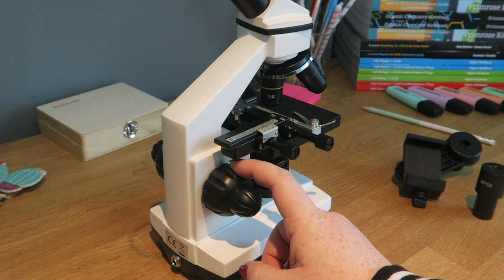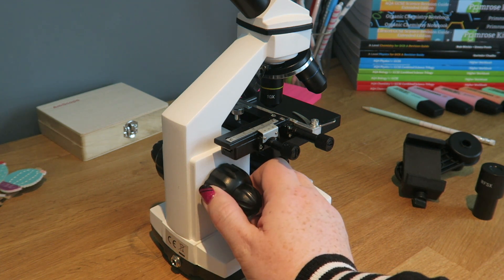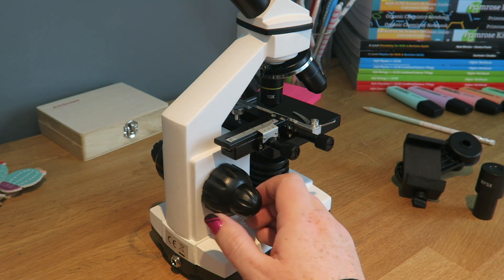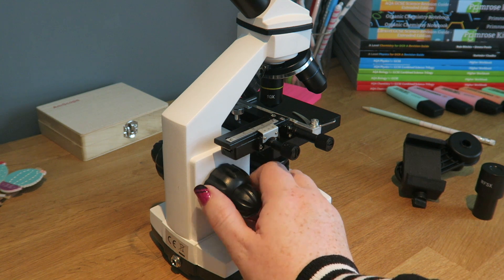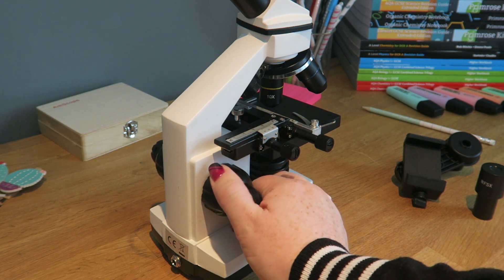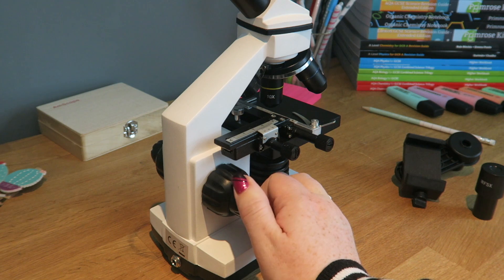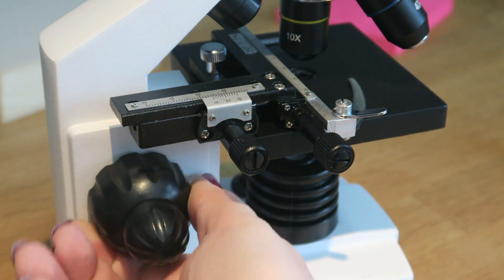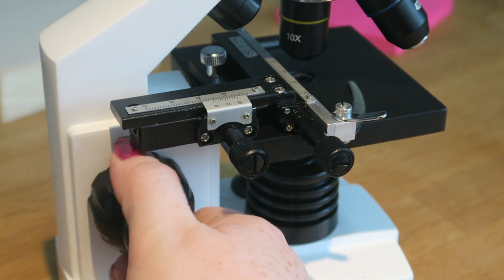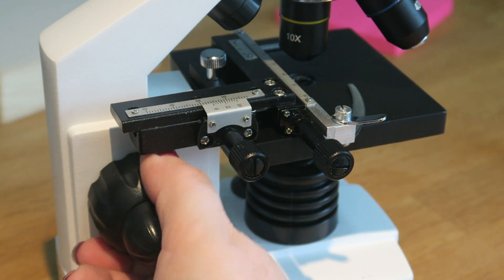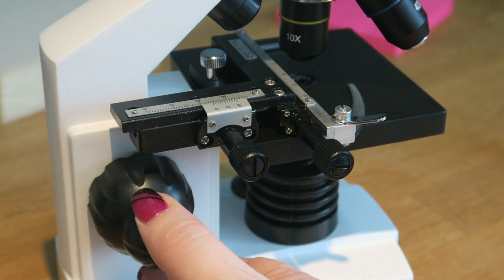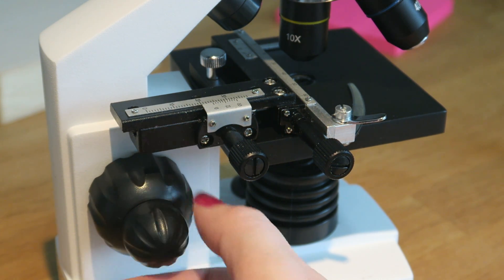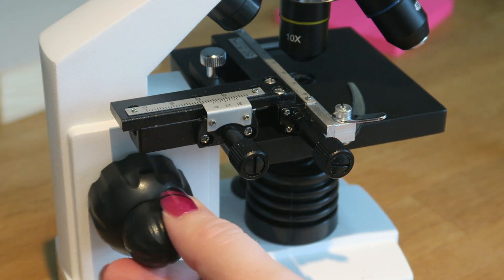At the side here, there's two focusing dials. This big one is the coarse focusing dial, and the small one is the fine focusing dial. And as you move these, the stage will move up and down. The coarse focus will move it in quite big chunks, quite quickly. Whereas the fine focus will move it in very, very small chunks, very slowly.